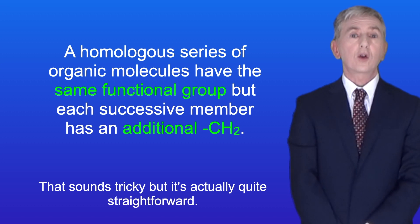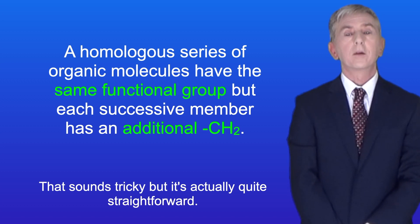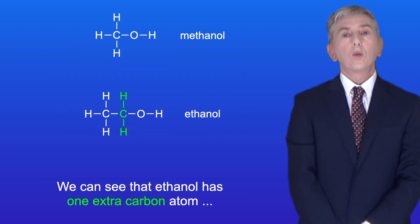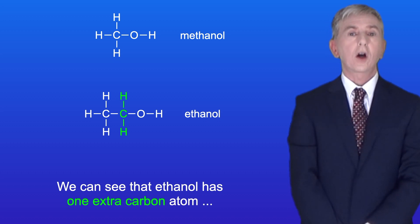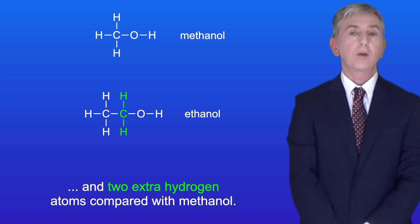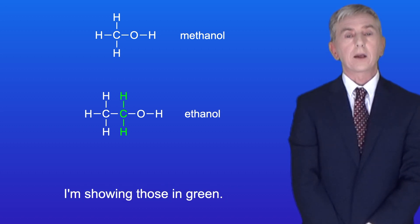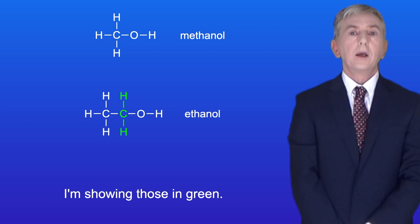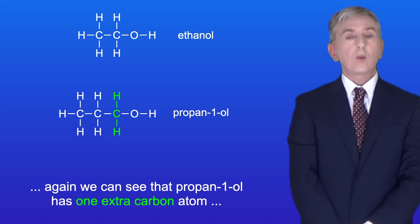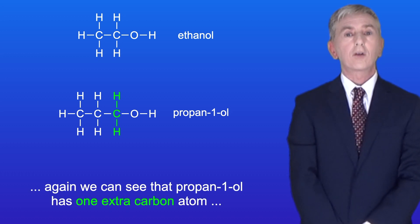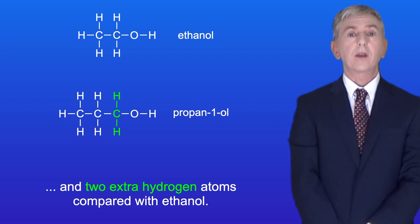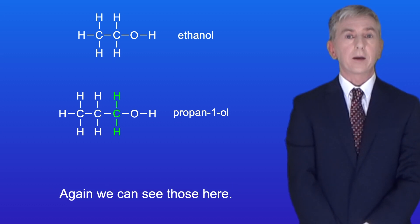That sounds tricky but it's actually quite straightforward. Comparing methanol with ethanol, we can see that ethanol has one extra carbon atom and two extra hydrogen atoms compared with methanol, and I'm showing those in green. If we compare ethanol with propan-1-ol, again we can see that propan-1-ol has one extra carbon atom and two extra hydrogen atoms compared with ethanol, and again we can see those here.